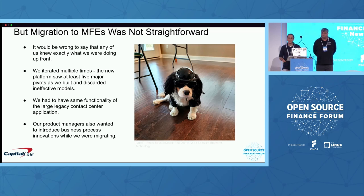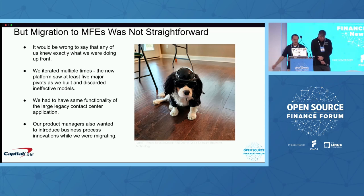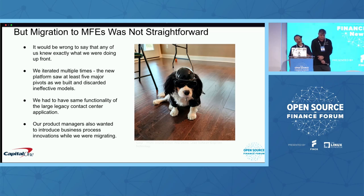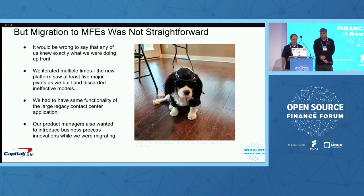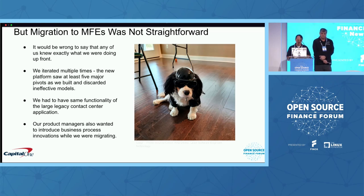We had to think about regulations and governance, and partner with our risk partners, our audit, and our architects. At the same time, we also had to keep our large legacy contact center application running. And nothing comes for free — our business partners who were very supportive also wanted business process innovations at the same time. So: innovating with new technology, innovating with business processes, and keeping the old system running.